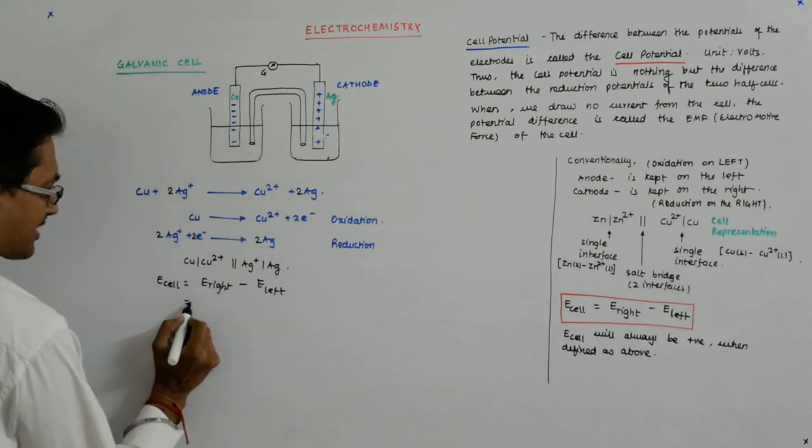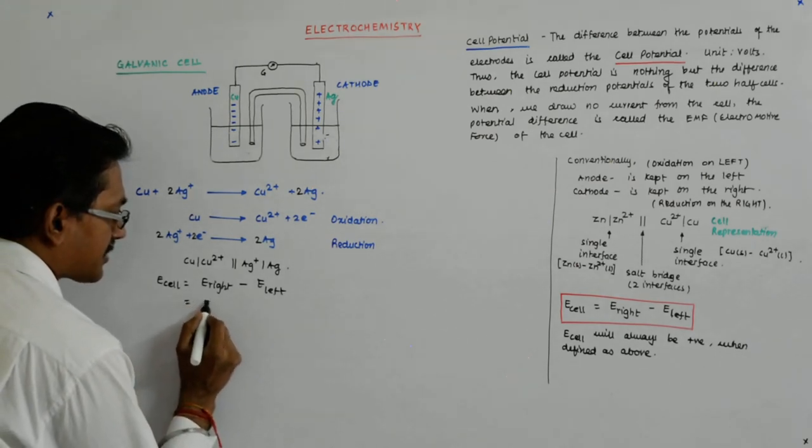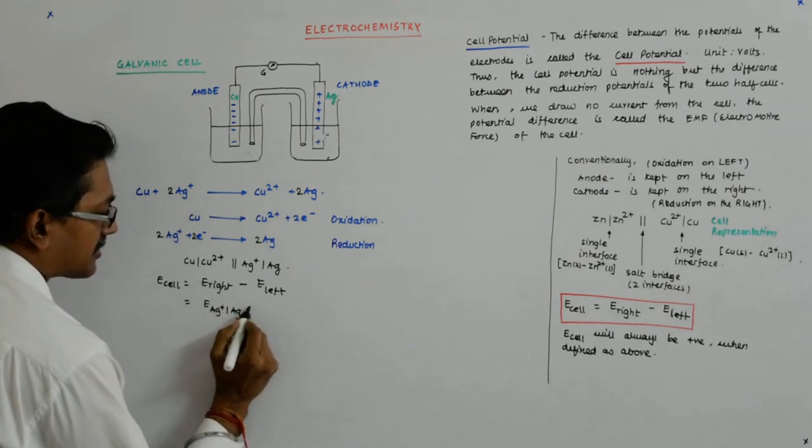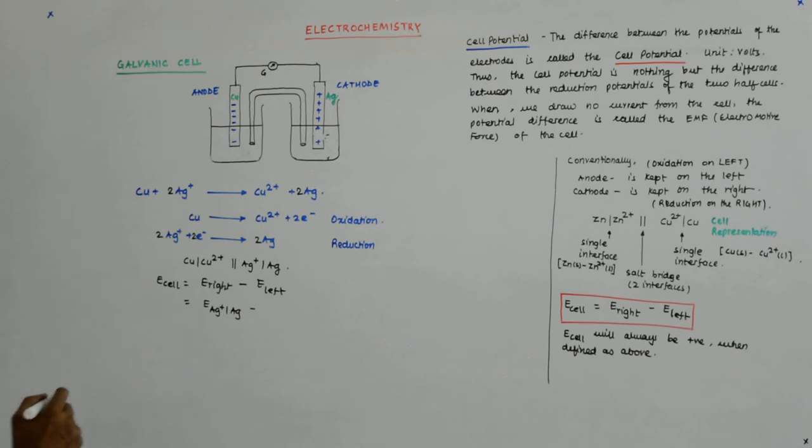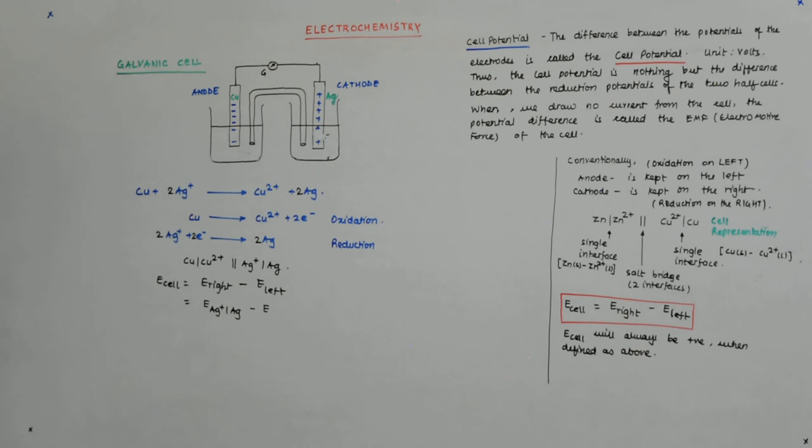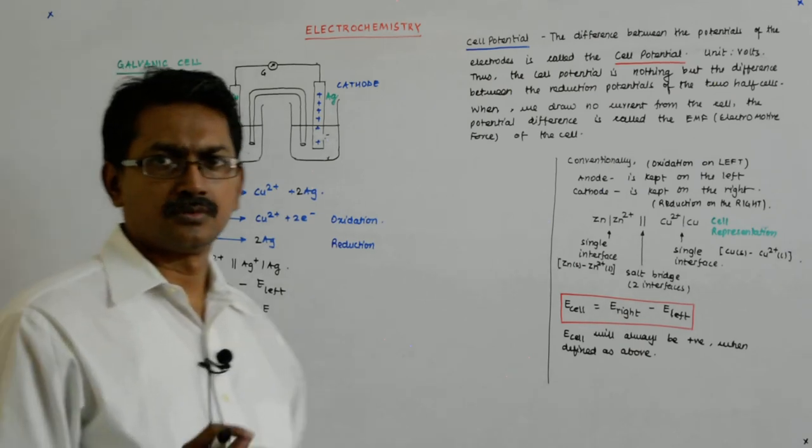What is E right? E right is Ag⁺/Ag. Now hold on, listen.